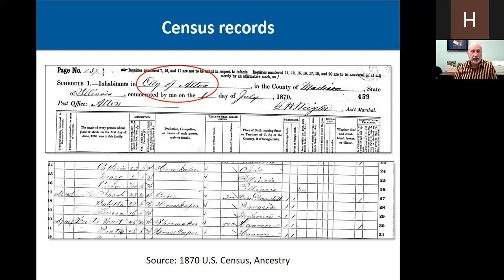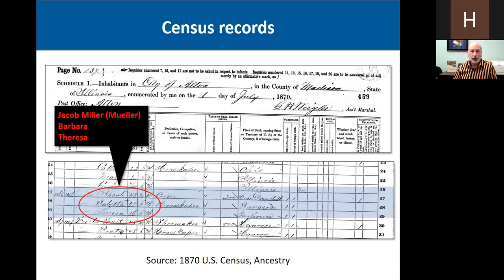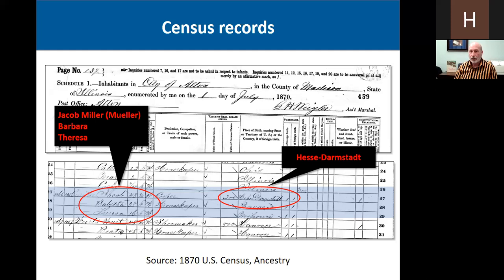We're looking at the 1870 census from the city of Alton, Illinois — specifically the enumeration for Jacob Miller, his wife Barbara, and his daughter Teresa. Teresa was my great-grandmother. It states here that the place of birth of Jacob Miller was Hesse Darmstadt. He consistently lists Hesse Darmstadt in the census, so I can feel pretty confident that this is the area he's from. It's a large area, but it narrows it down — at least it doesn't just say Germany, which gives me no clue. It gives me a specific principality or territory to look in.